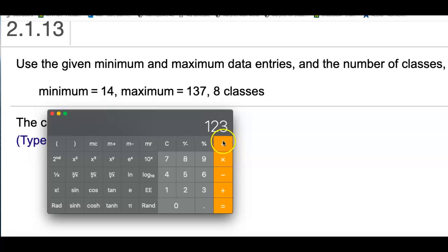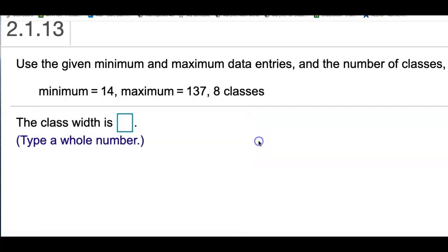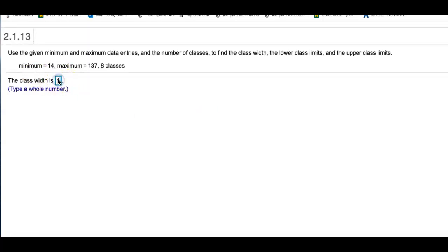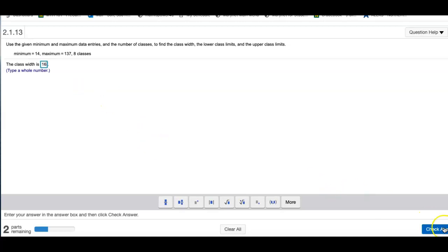We're trying to divide this by 8 classes. I'll click on dividing by 8. Always round up. So 15.375, let's round this up to 16. That's how you can find the class width.